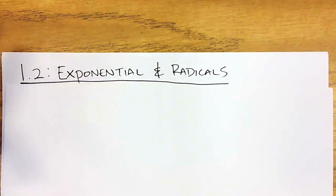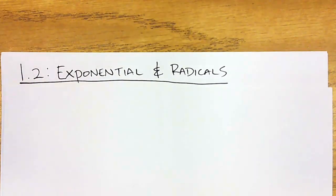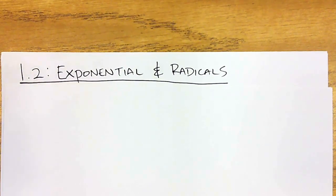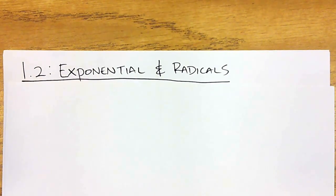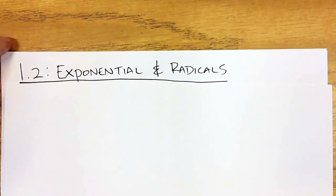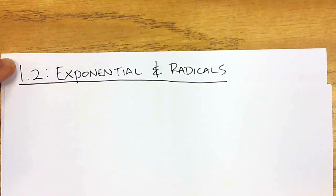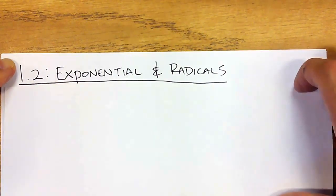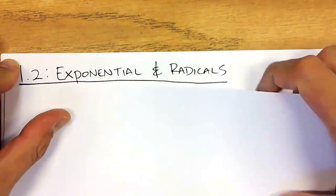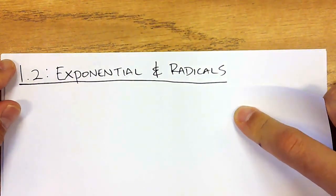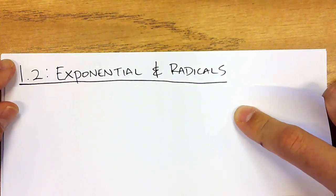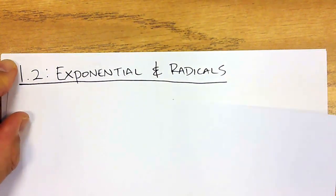Welcome everybody. We are talking about section 1.2 today in your pre-calculus book on page 13. That's where it starts. So we're talking about exponential form, exponents, and radicals.